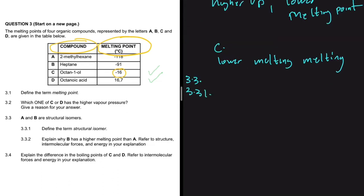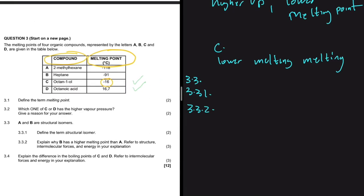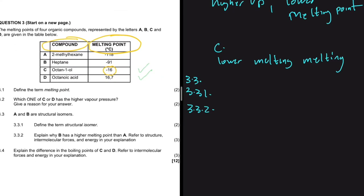3.3.1 says let's define the term structural isomer. Structural isomers are organic compounds that have the same molecular formula but different structural formula. Then 3.3.2 says: explain why B has a higher melting point than A, referring to structure, intermolecular forces, and energy in your explanation. A and B are structural isomers — they have the same molecular formula but different structural formula.